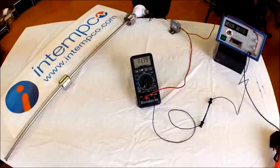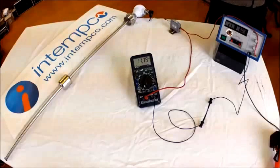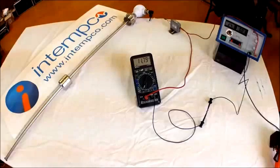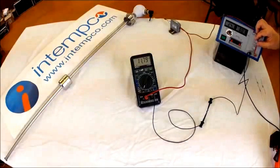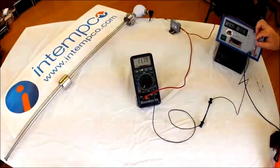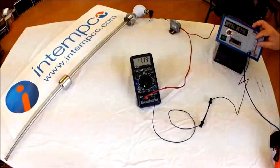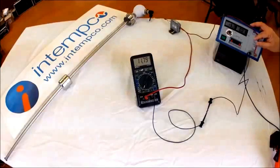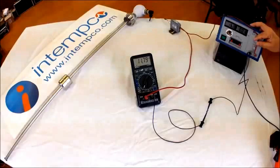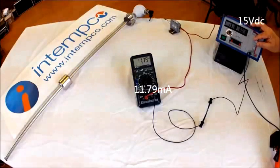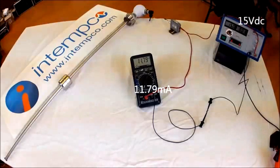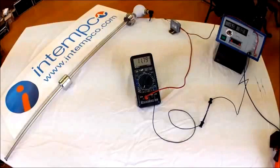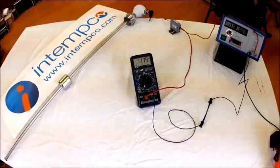We will keep the float at that position and now I will change the voltage level on the power supply to 15 volts. Notice while I change the voltage that the current does not change. These transmitters have an active processor in them that keeps the current level at the appropriate current despite changes in voltage.